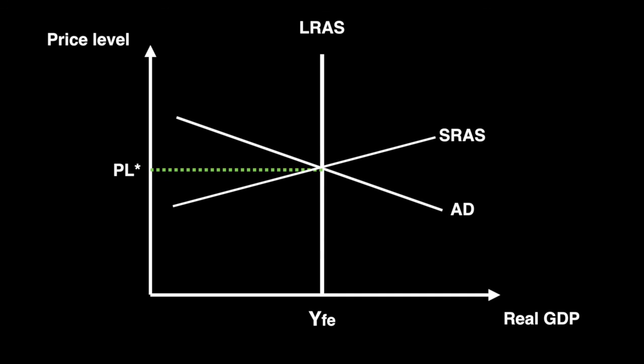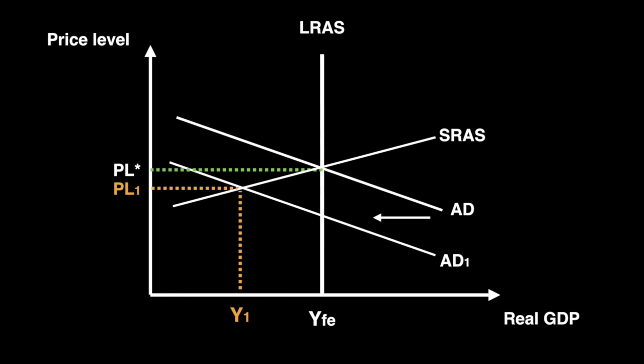Now let's move step by step and see what happens in the short run as we progress back towards the long run at a lower price level. Our starting point is with a short run and long run macroeconomic equilibrium at YFE and PLSTAR. When aggregate demand decreases from AD to AD1, producers have less incentive to produce. There is a contraction of supply and the output level falls below the full employment level. The distance between YFE and Y1 is our negative output gap, also known as a deflationary or recessionary gap. In the case of a recessionary gap, real GDP is below the potential level and unemployment is greater than the natural rate. Over time, as workers are out of work for longer periods of time, they are willing to accept lower wages in order to return to work. When they do this, the cost of production falls and the economy returns to its long run macroeconomic equilibrium.